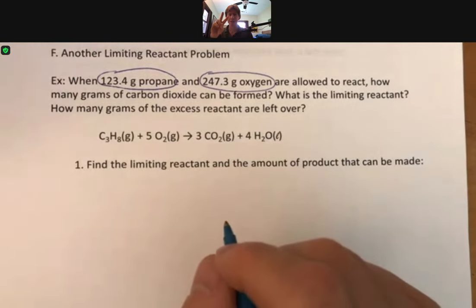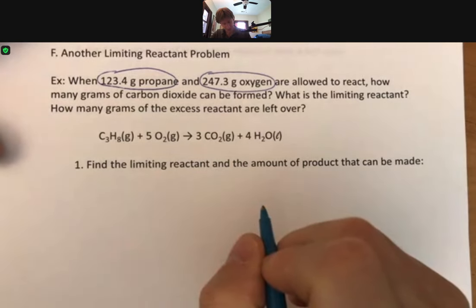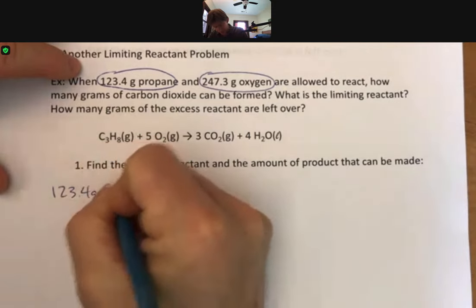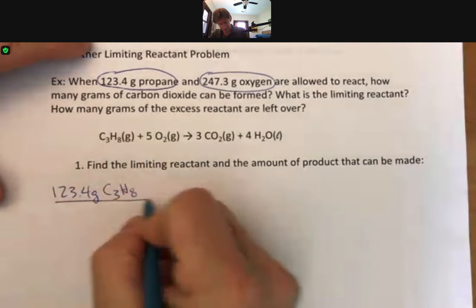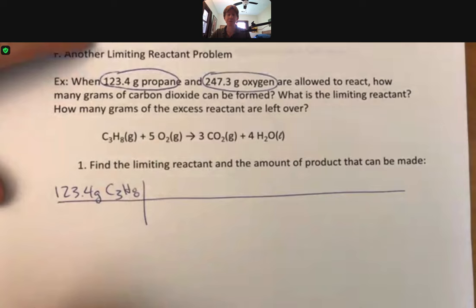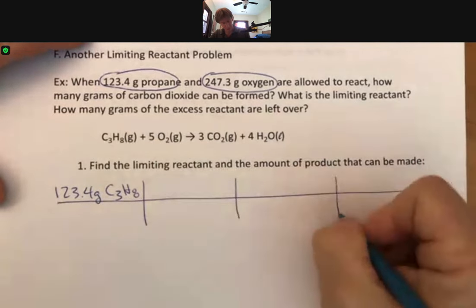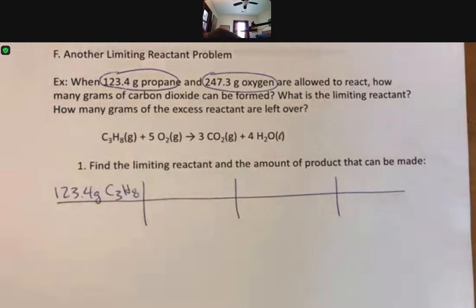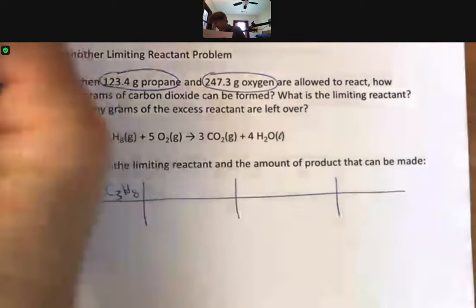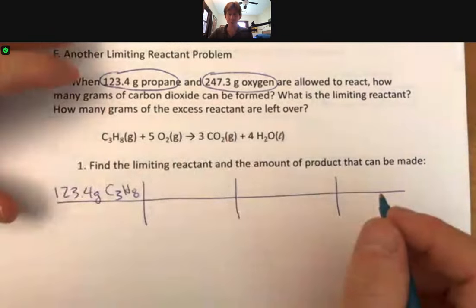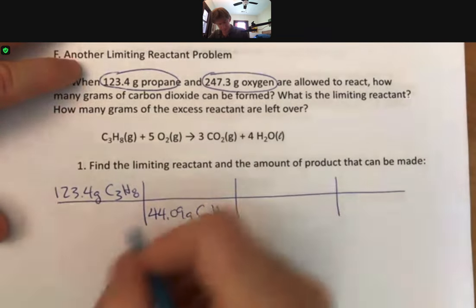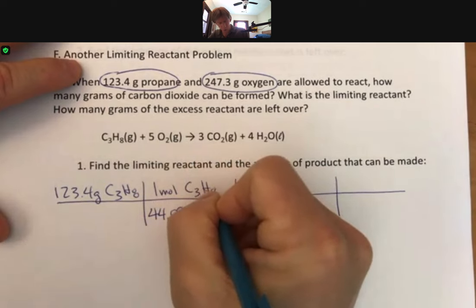Whenever I have amounts of two of the reactants, it means I'm going to have to do two GMMGs. So, start with the propane. And I'll actually just write out the formula for the propane here. We know we're going to have a nice long picket fence because we have three unit conversion factors coming up. And the first one is grams to moles using the molar mass of the propane.